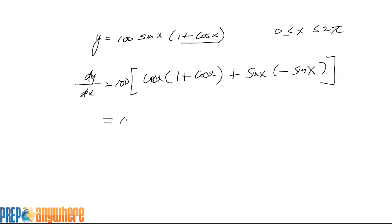Let's clean that up and expand. You get cosine of x plus cosine squared x, and here we get minus sine squared x.